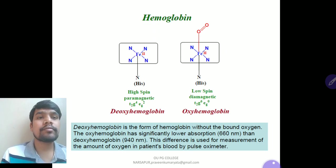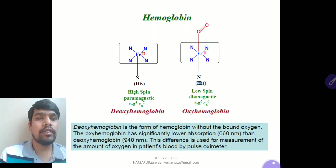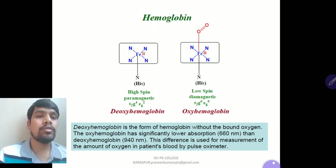The basic structure of hemoglobin includes deoxyhemoglobin (without oxygen binding) and oxyhemoglobin (with oxygen binding). Deoxyhemoglobin is high-spin paramagnetic with T2G4 EG2 configuration, whereas oxyhemoglobin is low-spin diamagnetic with T2G6 EG0 configuration.